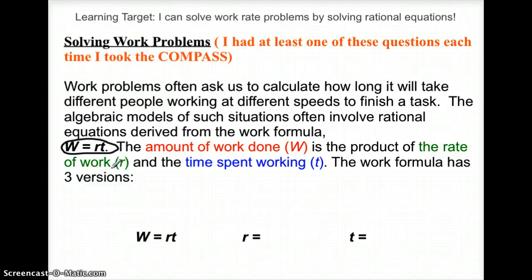R is the work rate for that person, and T is the time spent doing the work. So there are three versions because you could solve this equation for W, you could solve this equation for R where you would divide by T.